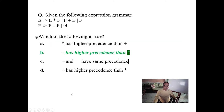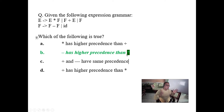This is a very good question. Given the following expression grammar with these two rules, the catch is that F is associated with F minus F — not F star F. So minus is given higher precedence, which is not normal in our programming language but as per this question, the answer is B because of this rule.